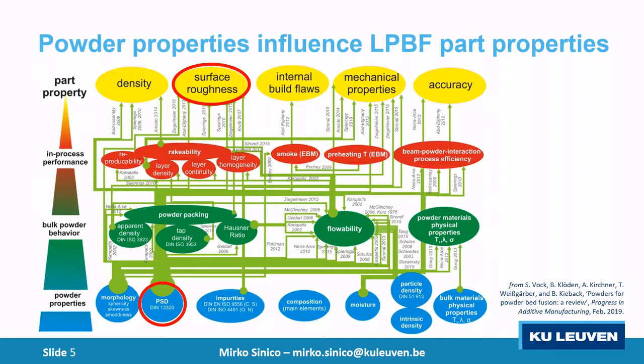This is quite well known in literature with many reviews connecting powder properties to part properties. But for this specific topic — connecting PSD to surface roughness — there are just a few papers. We know the general behavior: decreasing average particle size gives better surface, but we don't really know by how much. The few papers available are only on 316L stainless steel. So we try to bridge this gap and present results for maraging 300.